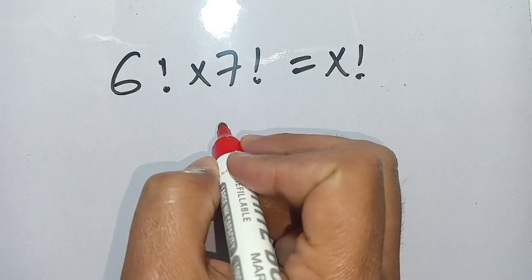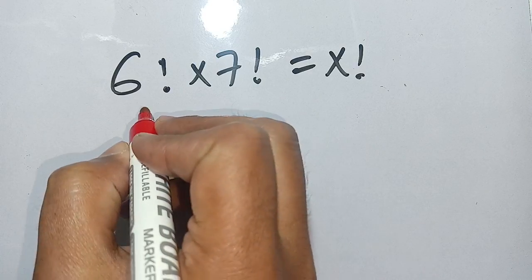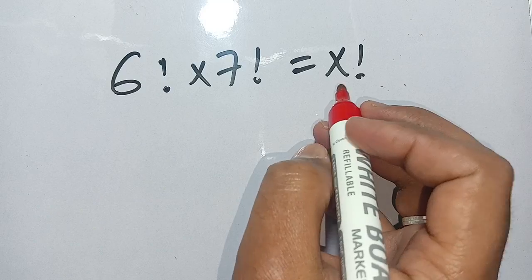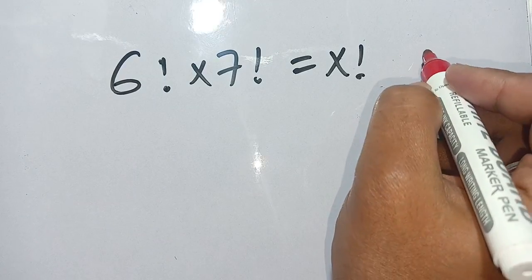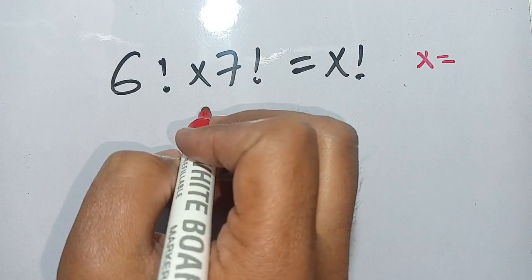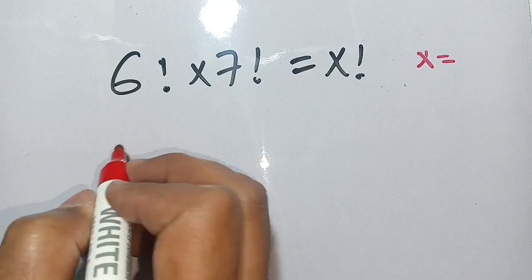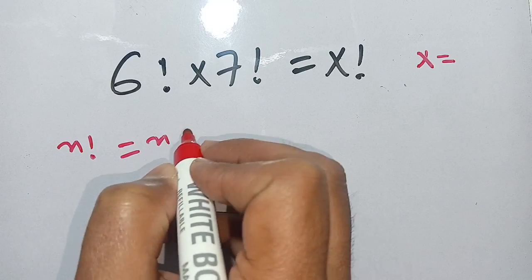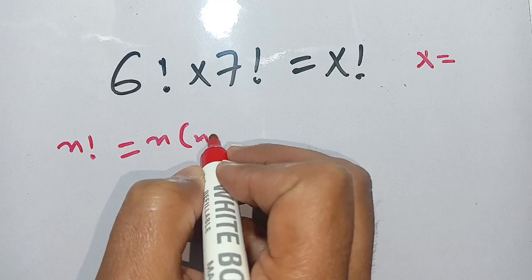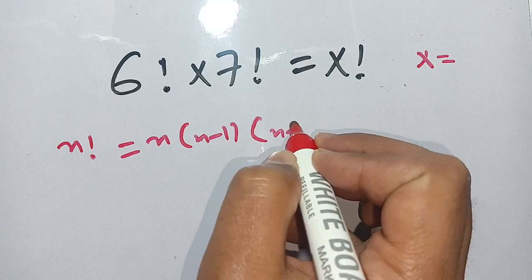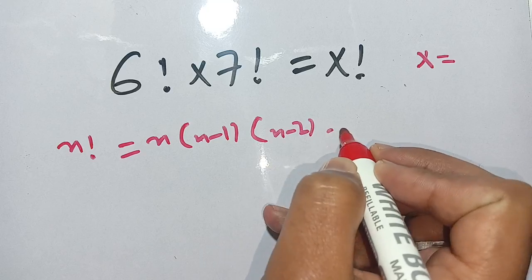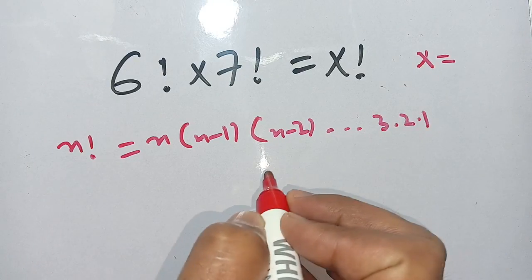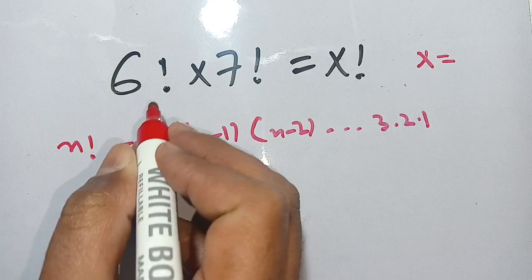Hello everyone. How to solve this factorial problem: 6 factorial times 7 factorial is equal to x factorial. We have to find the value of x which satisfies this equation. We know that n factorial is equal to n times n minus 1 times n minus 2, up to 3 times 2 times 1.